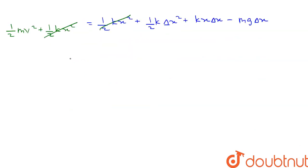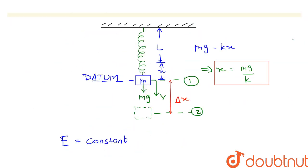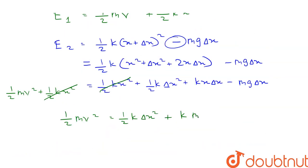So we get half mv squared equals half k delta x squared plus k times x equals mg by k, so mg by k times delta x minus mg delta x. K and k are cancelled. So this is also mg delta x.